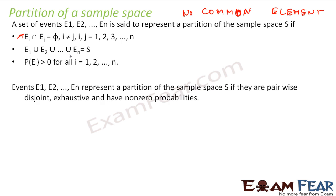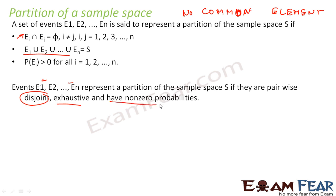So, events e1 to en represent a partition of the sample space if they are pairwise disjoint — that is, you take any two pairs, they are disjoint with no common element. They are exhaustive — that is, if you take all of them together you get the sample space. And they all have non-zero probabilities.